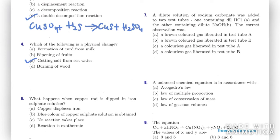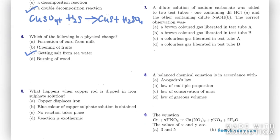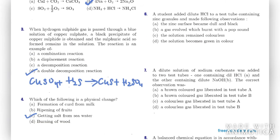Question five: what happens when a copper rod is dipped in iron sulfate solution? Iron is actually more reactive than copper, so copper will not displace iron from iron sulfate. There won't be any reaction here. The right option is C — no reaction takes place.